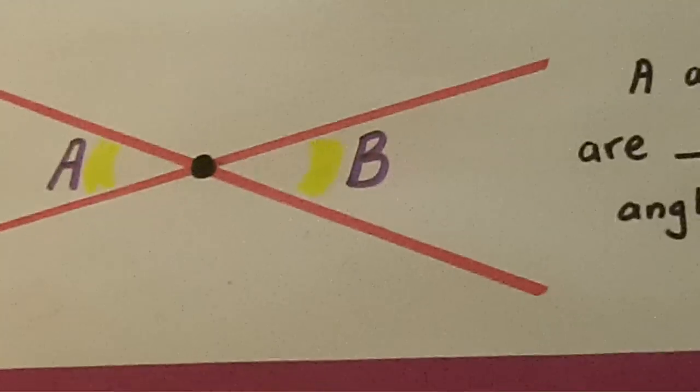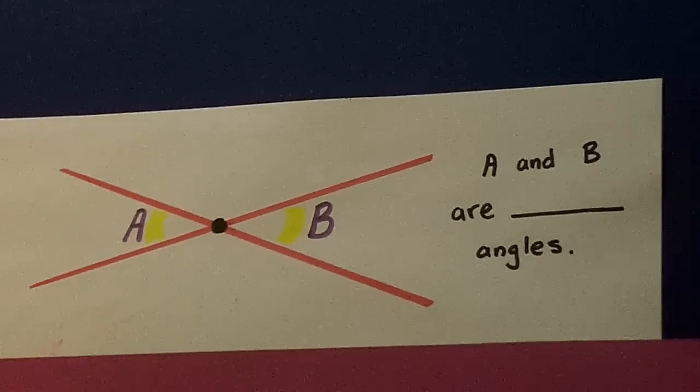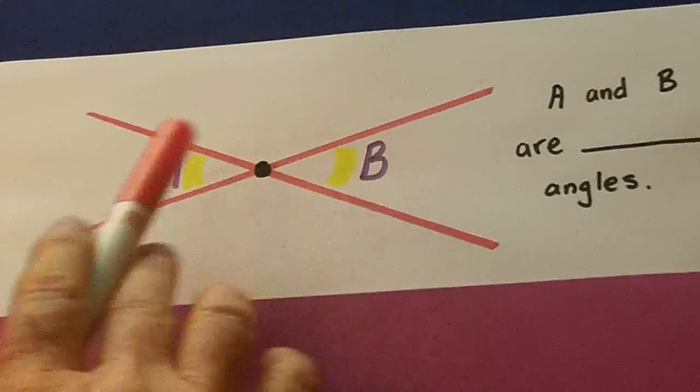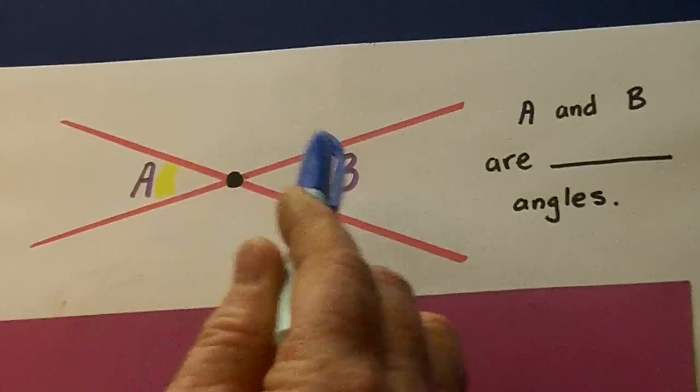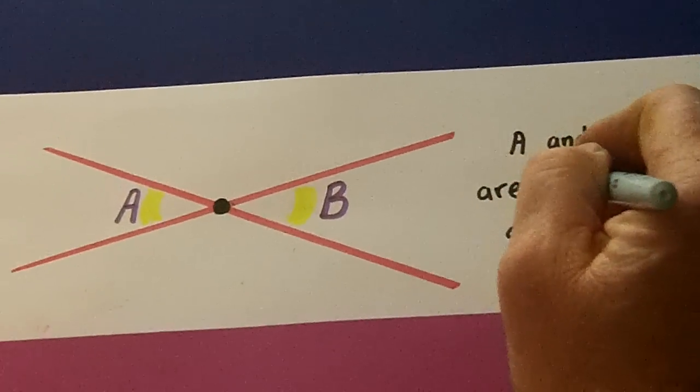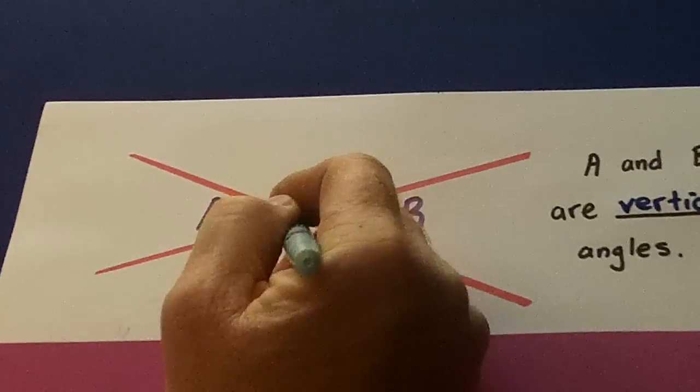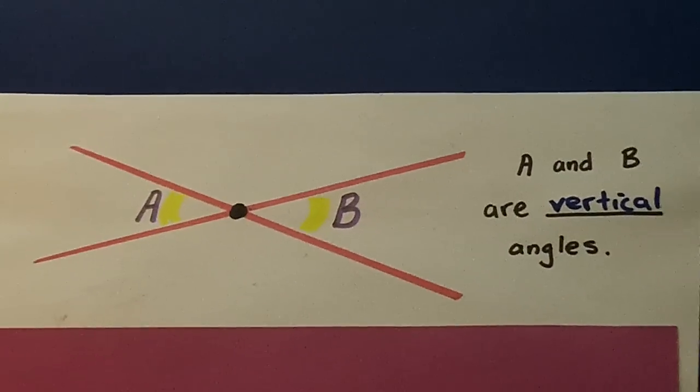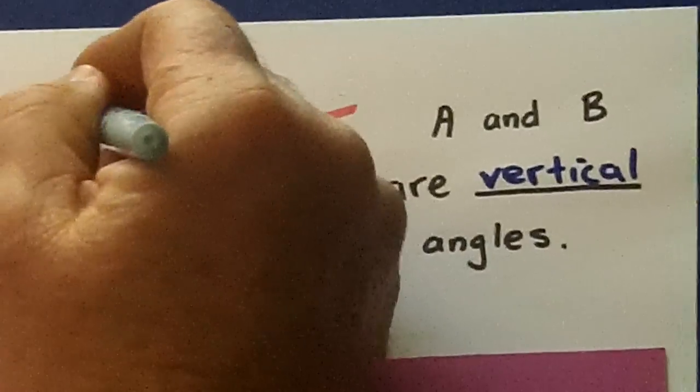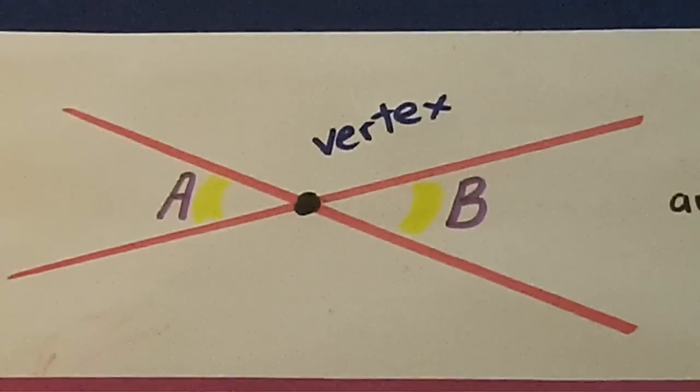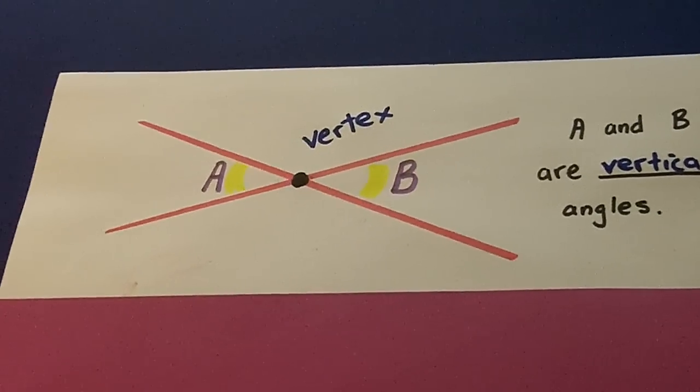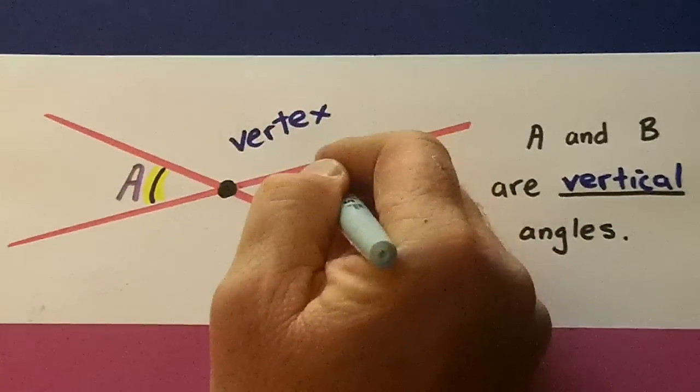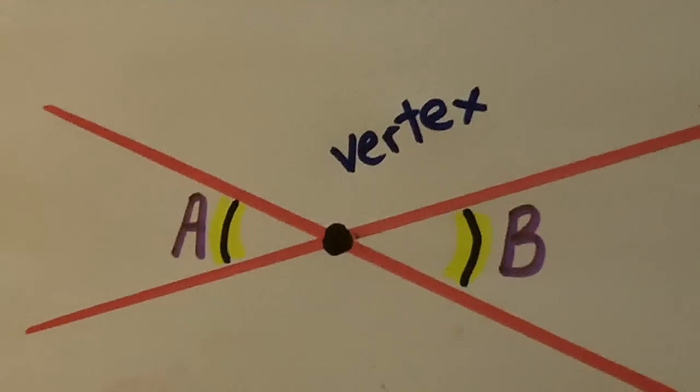And then our last type of major angle types are called vertical angles. Now, this looks kind of goofy because actually they look like horizontal angles here, A and B. But the reason they are called vertical angles is because this dot right in the middle where they intersect is called a vertex. So these are vertical angles on each side of a vertex. Now, what's really cool is these angles on each side of the vertex, they are equal.